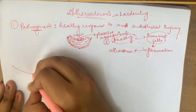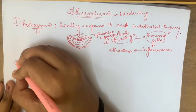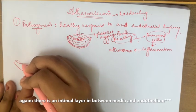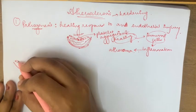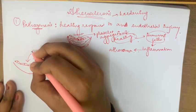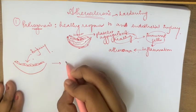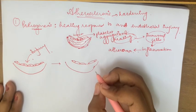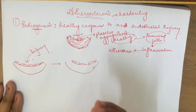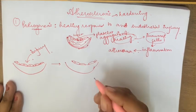So this is a normal arterial wall - the media layer, the endothelium. Now suppose due to some reason, there is an injury to the endothelium. That leads to facilitation of platelet aggregation and thrombus formation because you need to prevent bleeding.